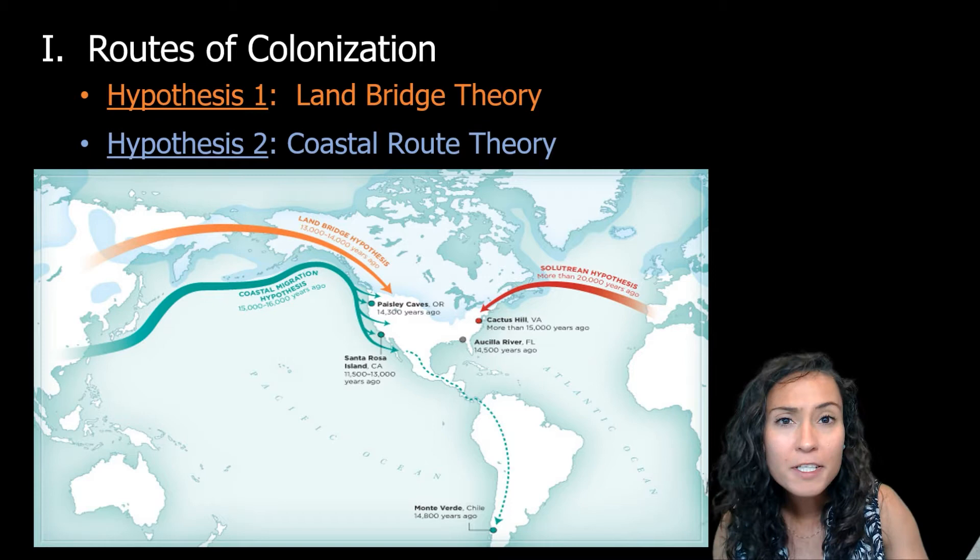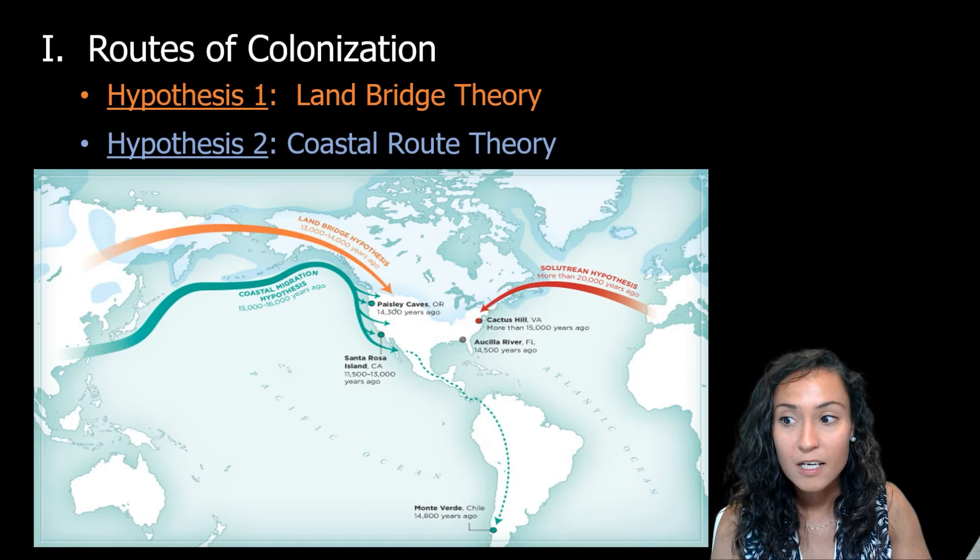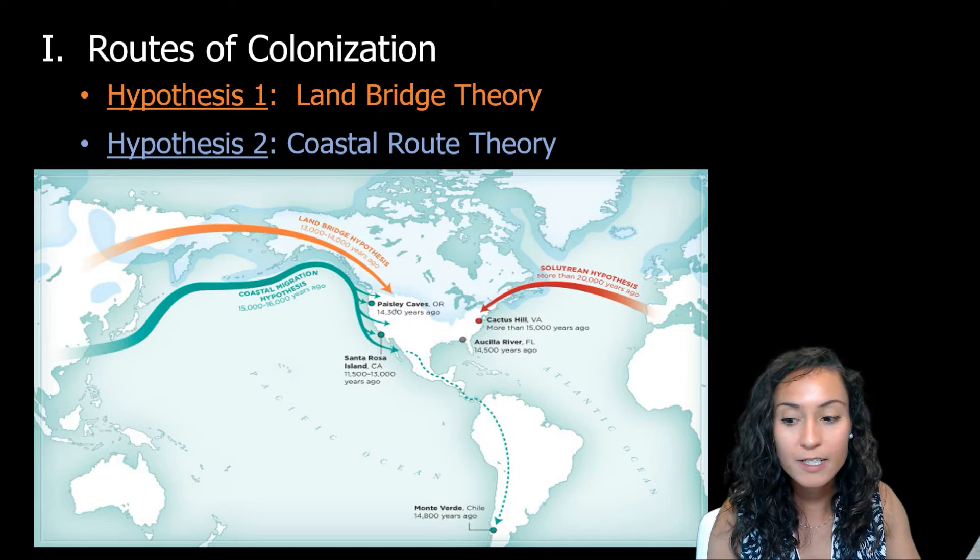Archaeologists have developed two primary models for how peoples moved out of Africa into Europe and Eurasia and eventually into the Americas. The first is a land bridge theory, and the second is a coastal route theory.